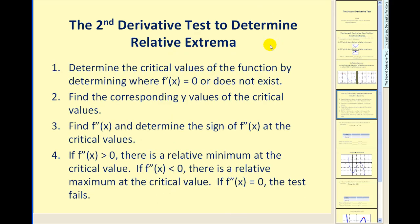Let's summarize the procedure for finding relative extrema using the second derivative test. Step one: find the critical values by determining where the first derivative equals zero or does not exist. Step two: find the corresponding y-values of the critical values. Step three: find the second derivative and determine its sign at the critical values. If the second derivative is positive, we have a relative minimum. If it's negative, we have a relative maximum. The test fails if the second derivative equals zero. Let's give it a try.